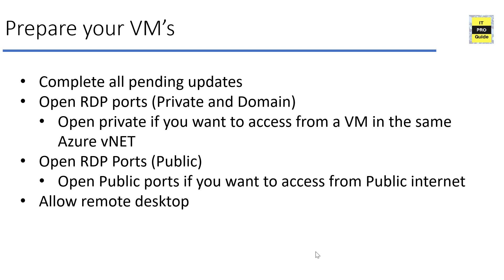Before starting migration, prepare your physical servers or virtual machines. First, complete all pending updates — this is mandatory, otherwise you will have difficulty spinning up the virtual machine in Azure after migration. Second, plan how you'll connect: options include RDP or Azure Bastion, which lets you connect through a browser. You should open RDP ports — either private or public depending on your environment — and allow remote desktop on the physical servers you are migrating from on-premises to Microsoft Azure.